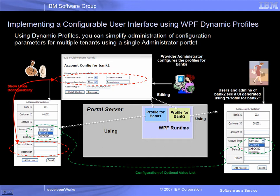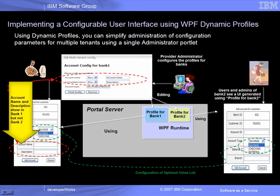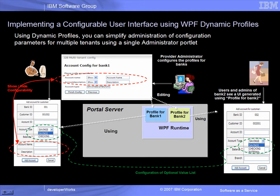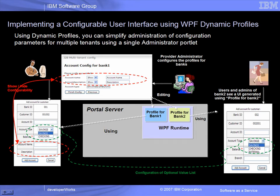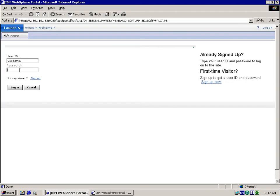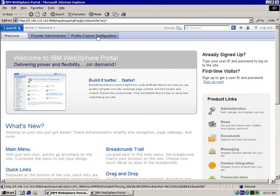Within the configuration portlet, we show how the provider administrator role configures the portlet fields Account Name and Account Description to show in Bank 1's Add Account for Customer portlet, while suppressing the account description from the same portlet for Bank 2. We also show how the account type selections are tailored for each bank by modifying the allowed values. In this demo, we will describe how to implement, manage, and specify profiles for multiple tenant banks. We log in as the provider administrator to view the configurability options that the bank supports.